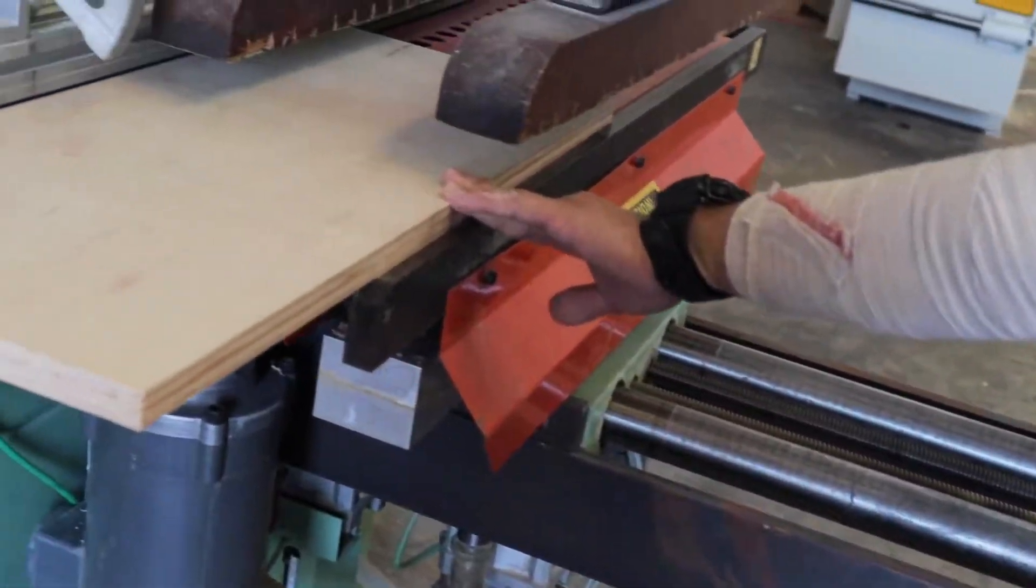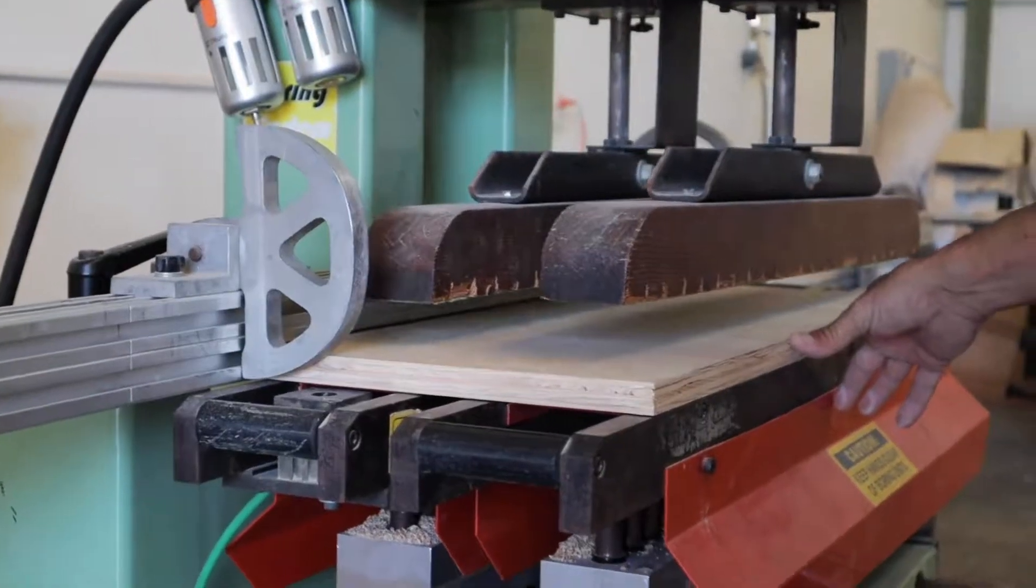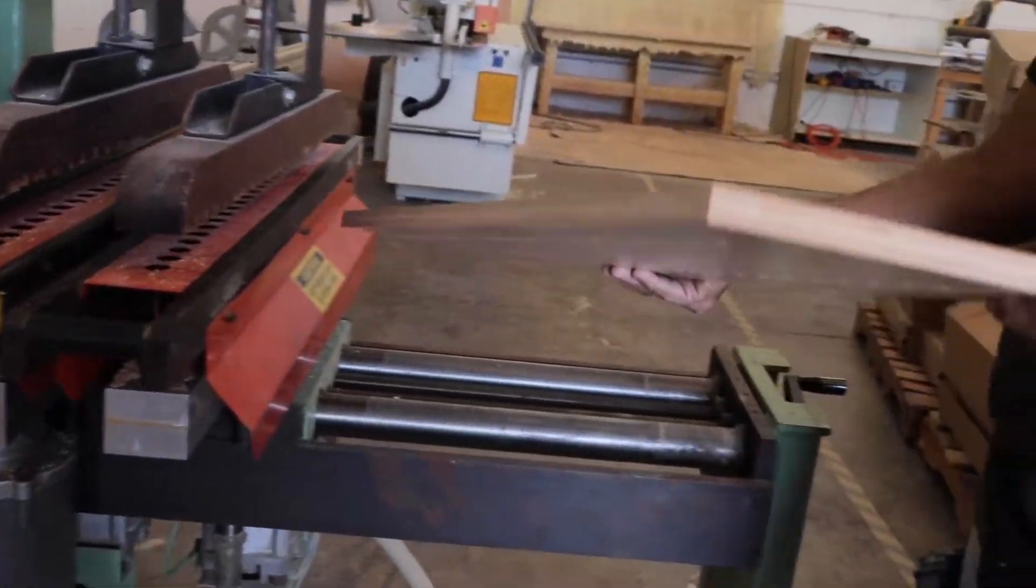Using a line-bore press, we're able to simultaneously punch all the shelf pinholes to keep them perfectly uniform and square.